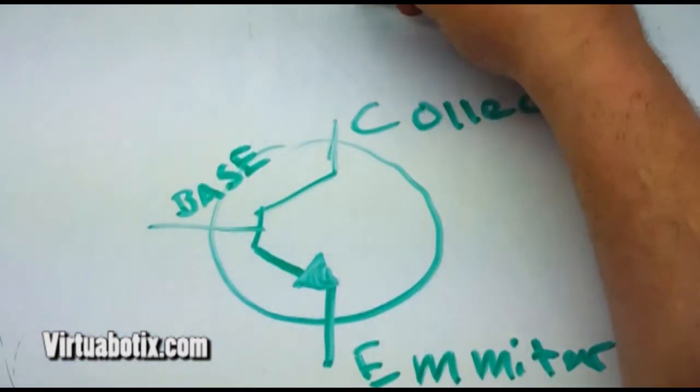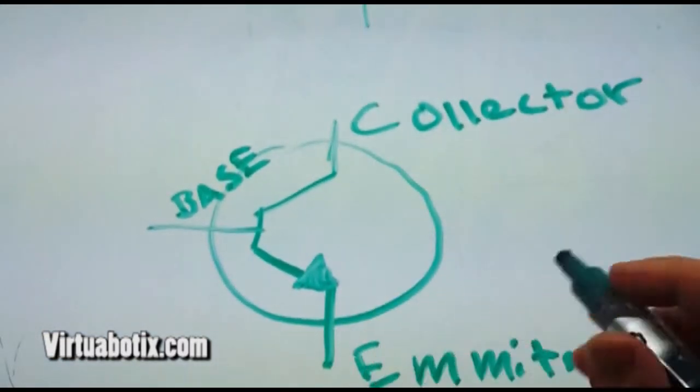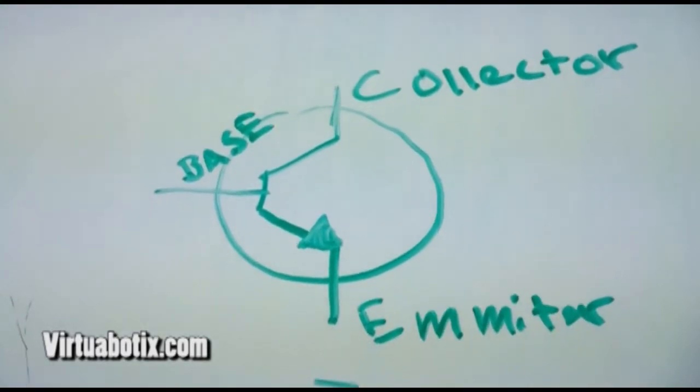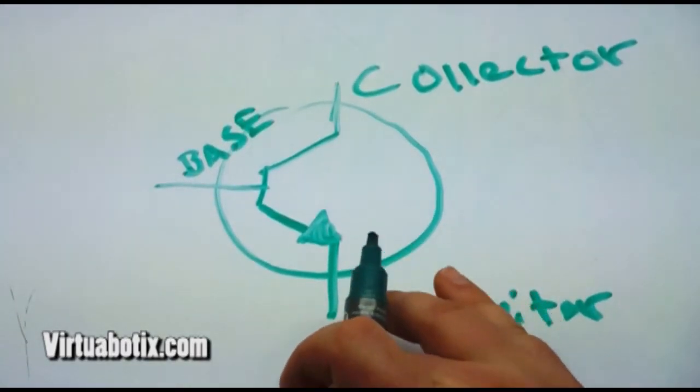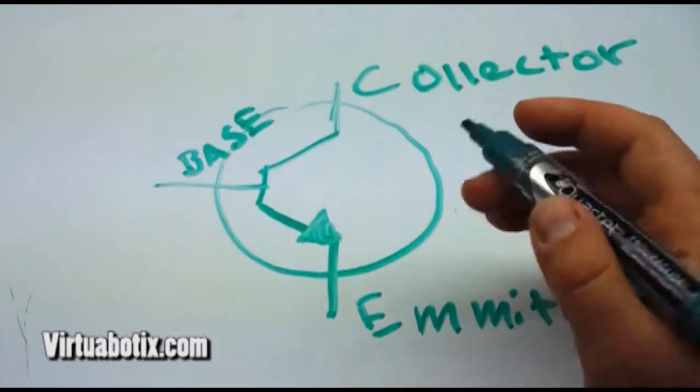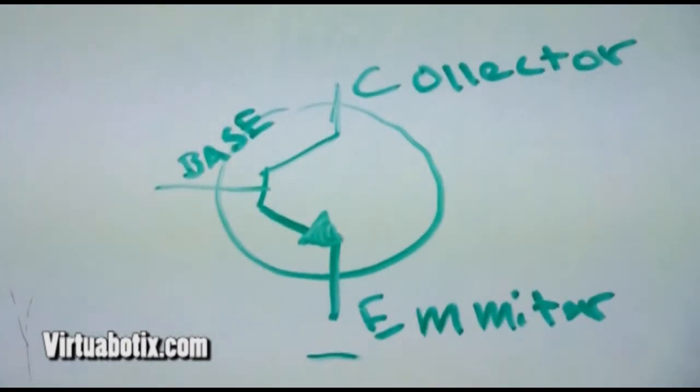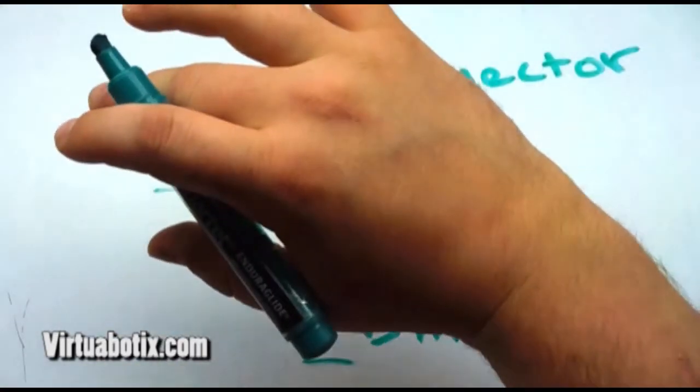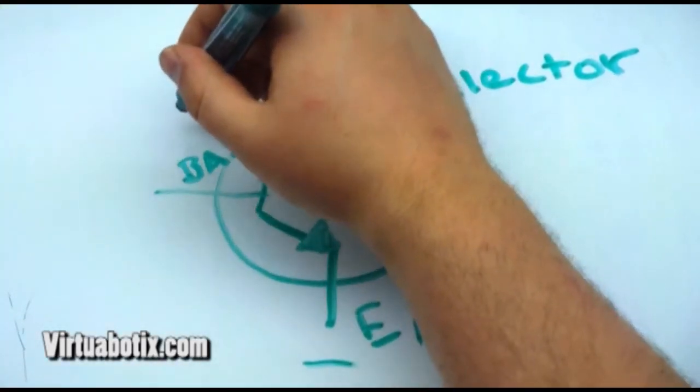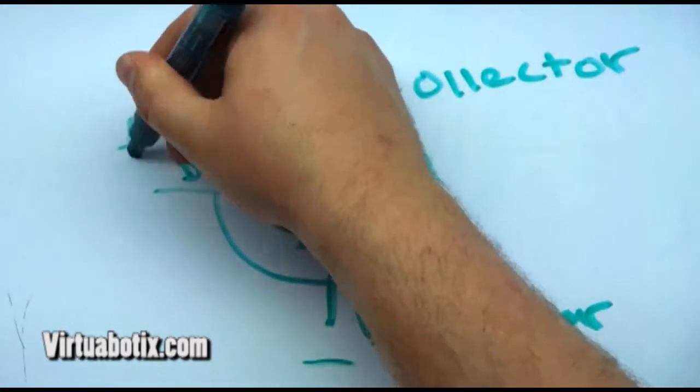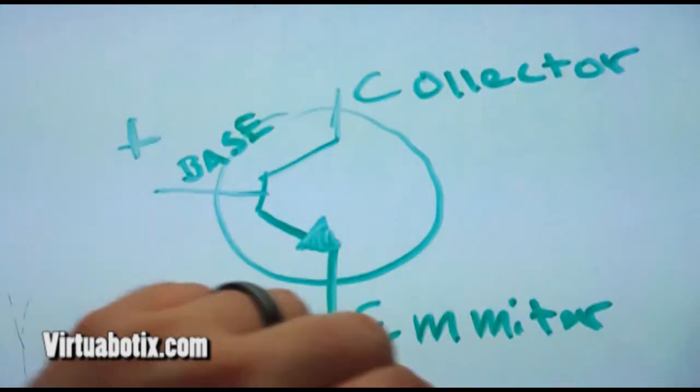Basically what happens here is you need your positive voltage here, negative voltage here, and then you apply your voltage here. So this is a positive to bias it, which means turn it on.